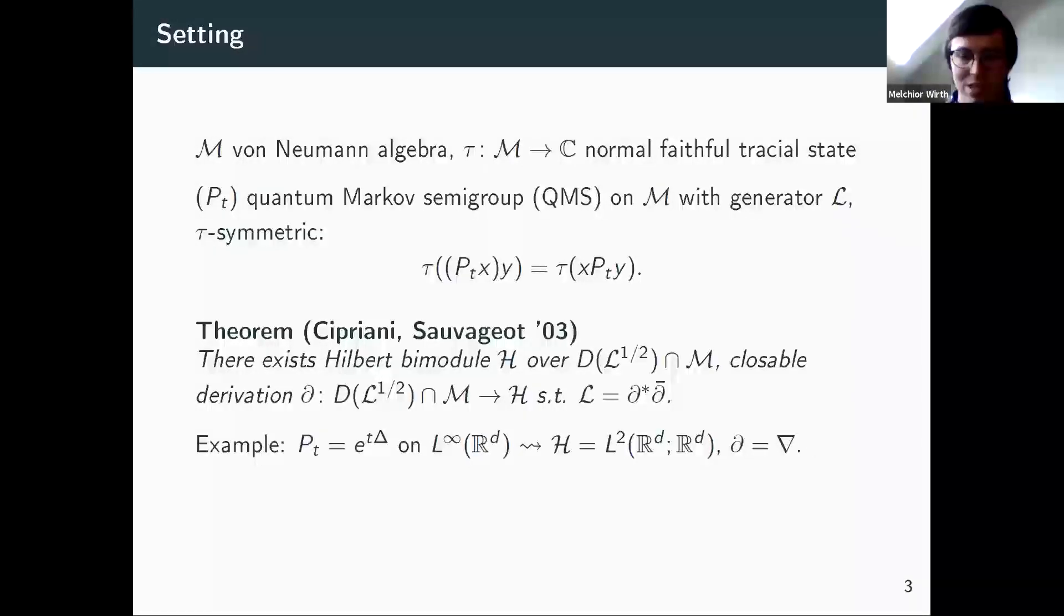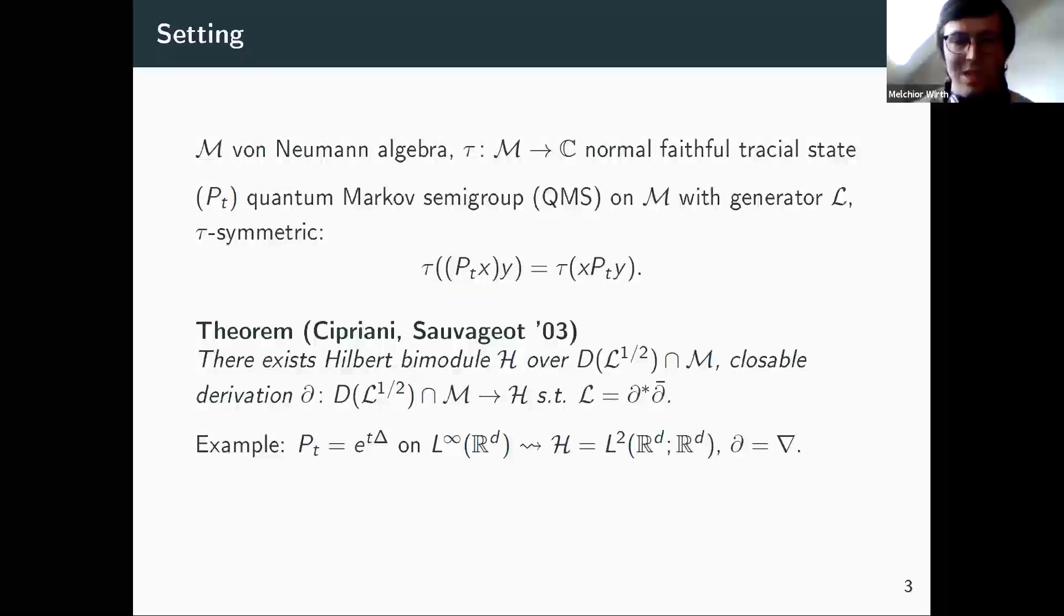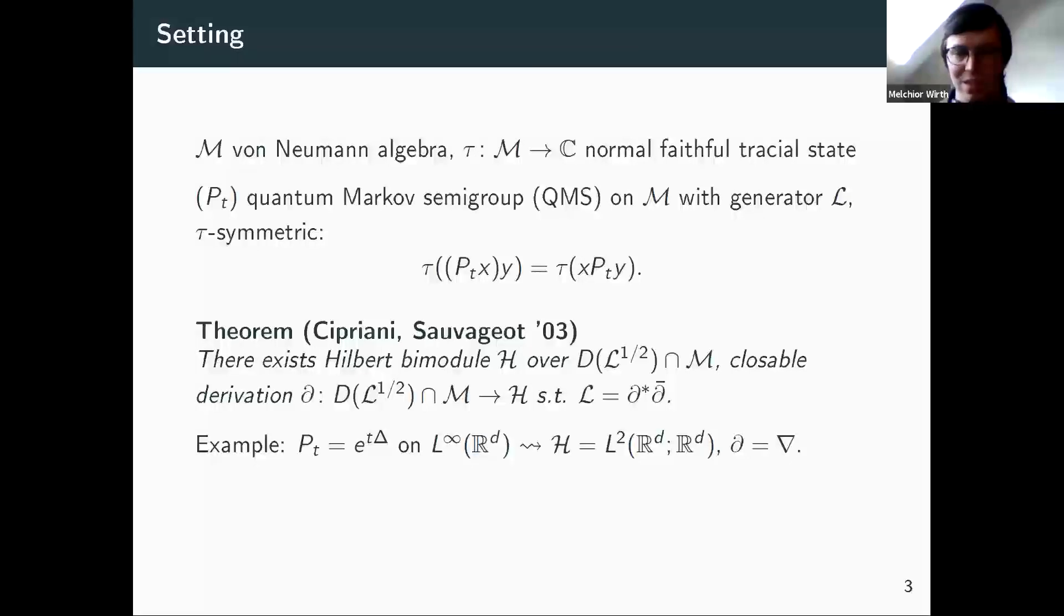But here I want to point out one important difference. When I write bimodule, this means that I have a left and a right multiplication. In the case of the heat semigroup, these are just the same. There's essentially one canonical way to multiply a function and a vector field. But in general, the left and the right multiplication will be different in our setting. And I should also note that, for everyone working in non-commutative stuff, that's not too surprising that when I go commutative to non-commutative, something like that happens. But here it really is not a feature of non-commutativity, but the same thing that left and right multiplication differ already happens if I have a non-local generator.